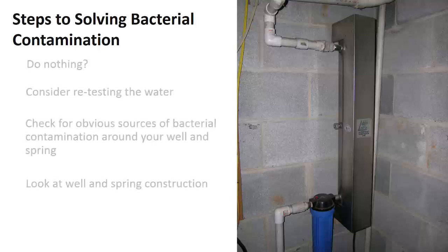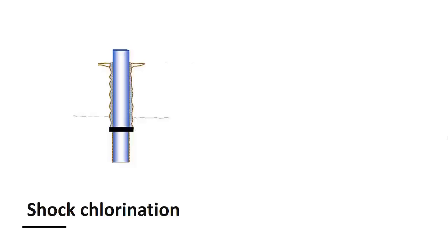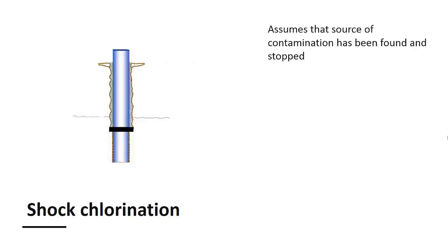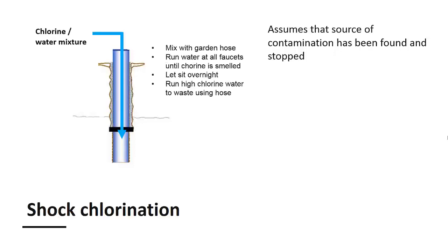Up until now, we have discussed methods to try to prevent bacteria from entering wells and springs. A final option for solving bacteria problems is to install treatment to kill bacteria as the water enters the home. Shock chlorination is a temporary treatment method that can be used to kill bacteria that have entered the well during repairs, heavy rain, insects, or other nearby sources of contamination. The effectiveness of shock chlorination assumes that the source of the original bacterial contamination has been found and stopped. The step-by-step process, which must be followed carefully, involves pouring a chlorine water mixture into the well, mixing it with a garden hose, running water to each faucet in the home until chlorine is smelled, letting it sit in the plumbing overnight, and then running the high chlorine water to a waste area the next day. The exact amount of chlorine to use and other details are explained in numerous online articles and videos about shock chlorination.